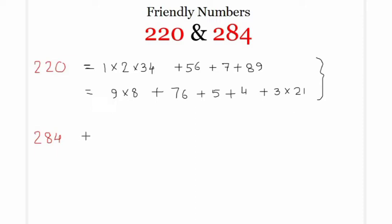Similarly for 284, we can write like 12 plus 34 times 5 plus 6 plus 7 plus 89. This is one representation of 284 in increasing order. In the same way we can represent it in decreasing order also.